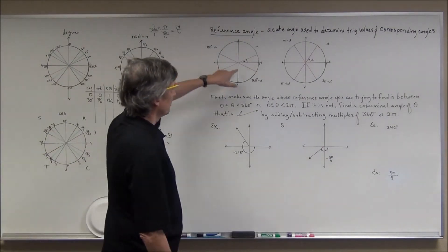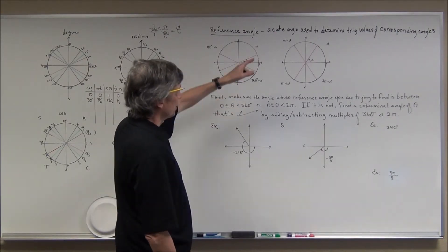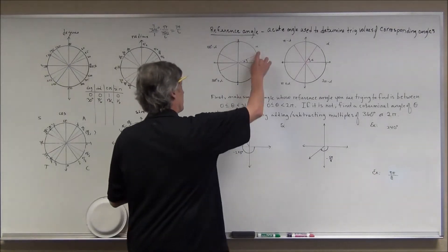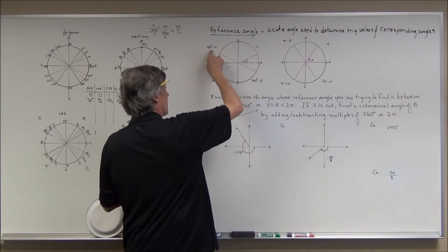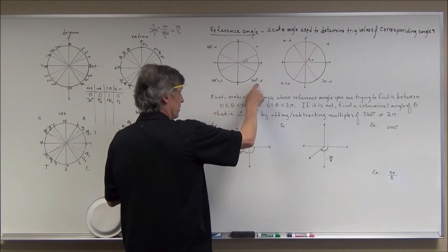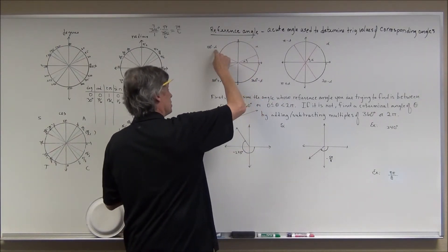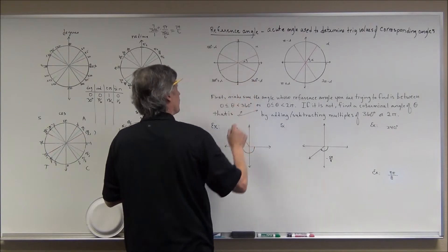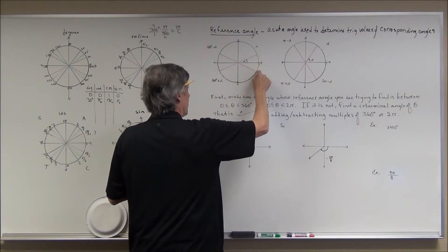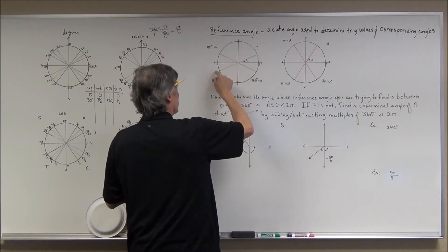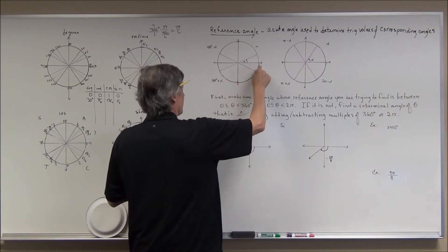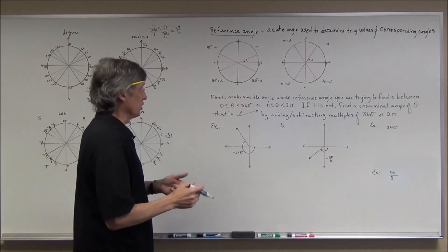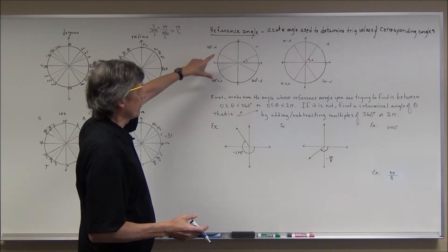Don't forget the reference angle idea. The reference angle is an acute angle we use to find trig values at corresponding angles. If the acute angle is alpha: second quadrant is 180 − α, third quadrant is 180 + α, fourth quadrant is 360 − α. So if alpha is 20°: 160°, 200°, and 340° respectively. Corresponding angles share either the same x-values or opposite x-values, and the same y-values or opposite y-values.